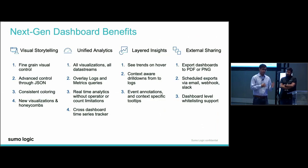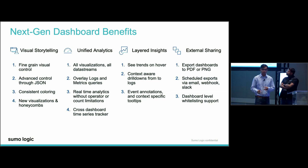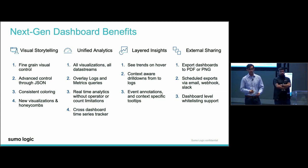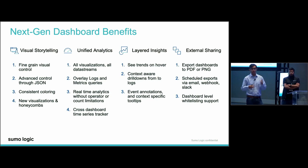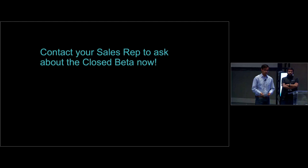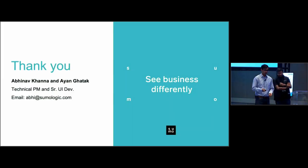In summary, we can break down next-gen dashboard benefits into four major categories: visual storytelling, unified analytics, layered insights, and external sharing. Highlights include fine-grained visual control, all visualizations, all data streams, overlays between your logs and your metrics, drill-deeper layered insights via peaks and quick iterations without having to create new searches, and external sharing so you can share dashboards outside of the Sumo ecosystem. I hope you agree that next-gen dashboards are awesome—you can transform your data with ease, isolate patterns quickly, and get deeper insights effortlessly. Contact your sales rep today to ask about the closed beta.